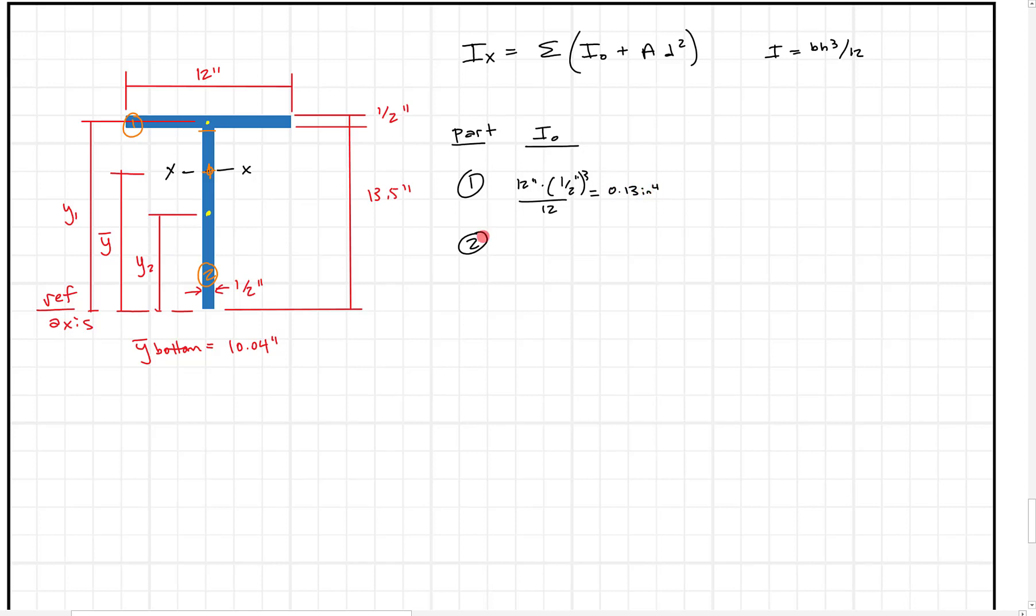Section two, what I'm going to say is section two is going to be the same formula, different base. In this case, we're going to have a base of a half an inch times a height of 13.5 inches. I have to cube that, divide it by 12. And when I do that out, I get a decent number. The 13 cubed becomes pretty big. And I get 102.52 inches to the fourth. So that's box one. We got I naught.